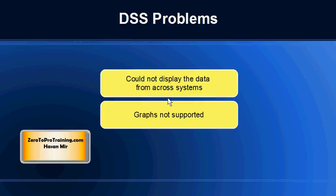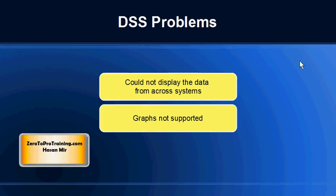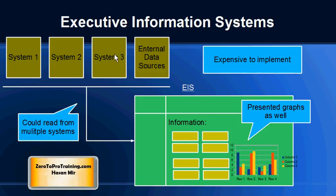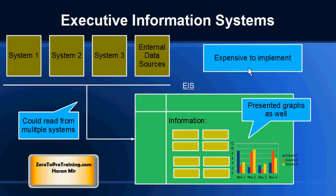Decision Support Systems did solve some problems, but a few remained. Data could not be displayed across systems, and graphical features such as charts, graphs, and the ability to make predictions were not available. These limitations became the basis for the evolution of Executive Information Systems.